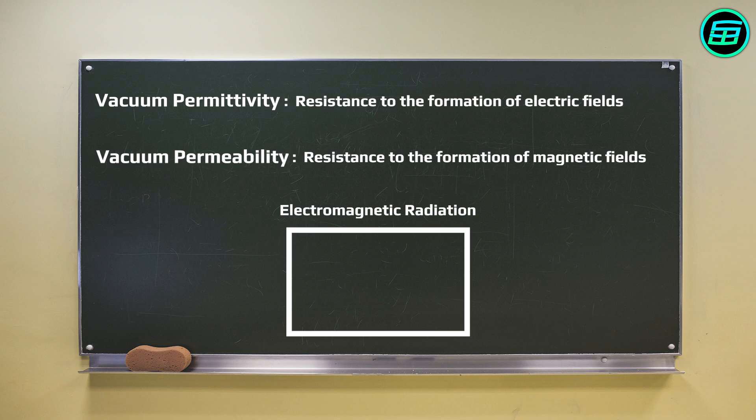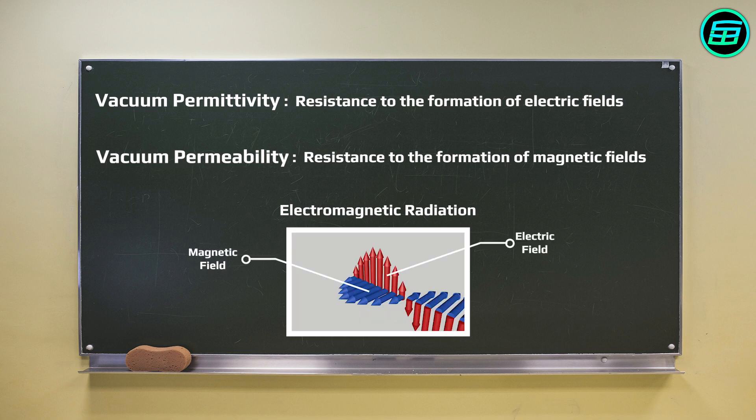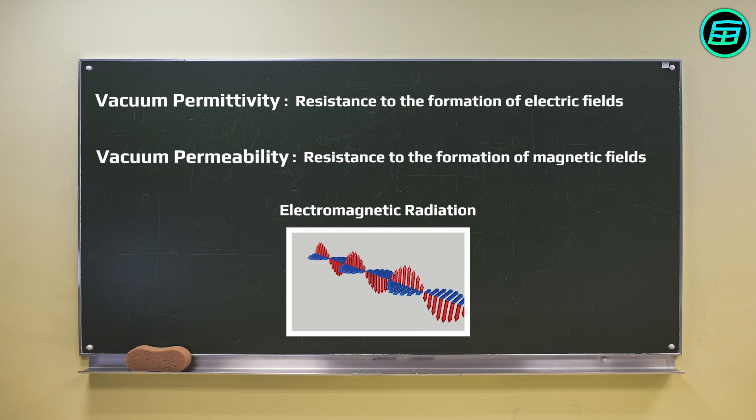Since electromagnetic radiation consists of electric and magnetic fields, the universe also limits the speed of electromagnetic radiation, in other words, the speed of light.